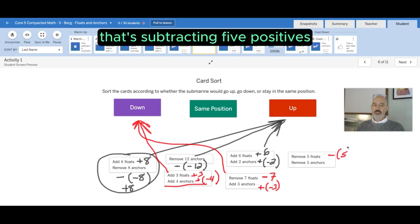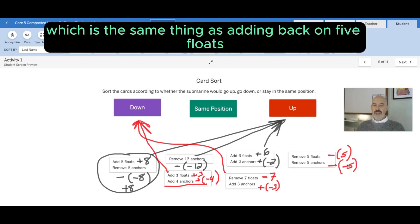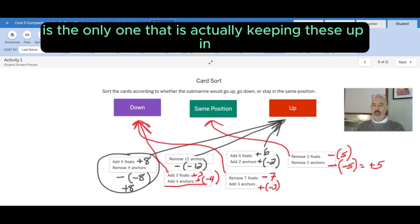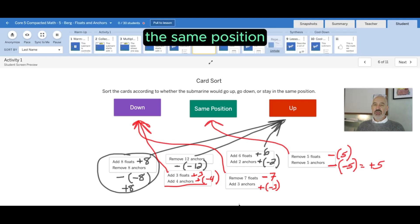And then finally, remove five floats, that's subtracting five positives. But then removing five anchors, that's subtracting five negatives, which is the same thing as adding back on five floats. So this one is the only one that is actually keeping these up in the same position.